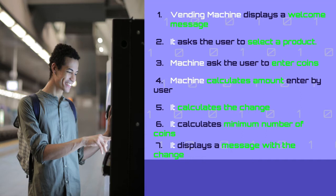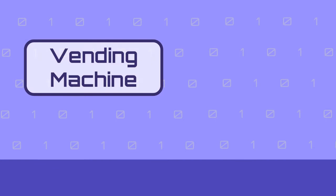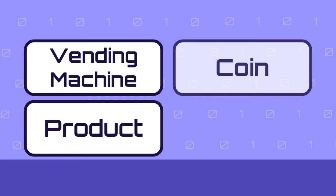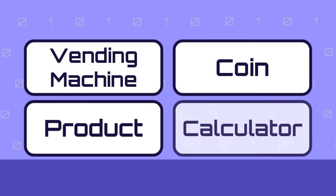Now that we understand our use case better, let's identify the entities of our problem. We will need a vending machine, obviously, also products and coins. And since we are doing calculations like calculating the change and the number of coins, another class called Calculator will be really helpful, because it will give us a place to gather all calculations together.